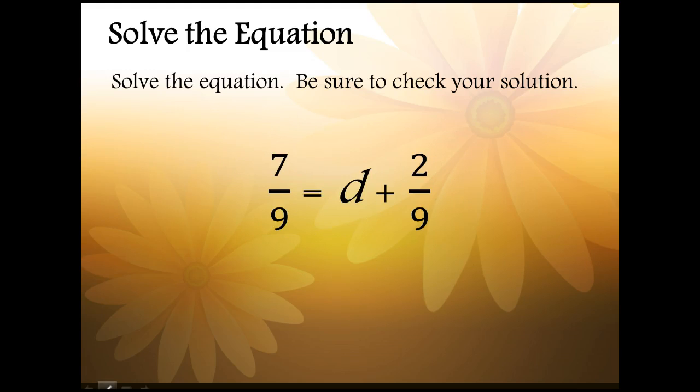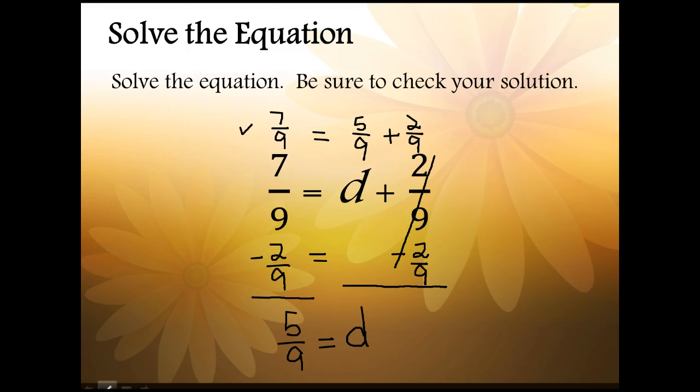Next let's try this equation with fractions. We locate the variable which is on the right side of the equals sign. In order to isolate d we will need to subtract 2 ninths from both sides of the equation. 7 ninths minus 2 ninths is 5 ninths and on the right side of the equation the plus 2 ninths and minus 2 ninths will cancel out. They'll equal 0 so 5 ninths is equal to d. Then we can go ahead and plug that back in and we can see that 5 ninths plus 2 ninths does in fact equal 7 ninths so we know we have found the correct solution.